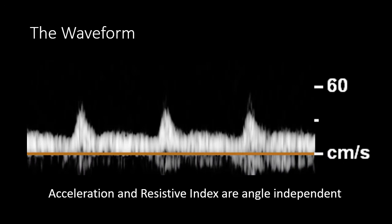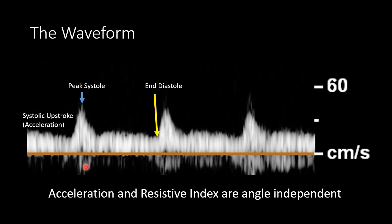Now let's look more closely at the key features of an arterial waveform. Typically the highest velocity point in an arterial waveform is peak systole, which occurs at the end of left ventricular contraction. We are often going to compare peak systole to end diastole, which is the end of passive flow just before left ventricular contraction. One common way we assess the change in velocity over time is with the systolic upstroke, also known as acceleration, defined as the change in velocity over time — from end diastole to peak systole. A normal arterial waveform has a brisk upstroke. When we have delayed acceleration or blunting of that systolic upstroke, that can indicate proximal stenosis and is commonly referred to as parvus tardus.